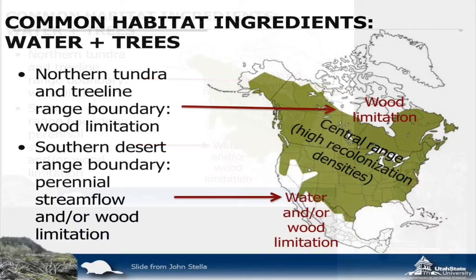The common habitat ingredients that beaver look for are pretty simple: they need water and they need wood. If you look at North America, when we get up into the north we start to see a wood limitation - when you get into tundra. We also see a wood limitation down in the south, and a water limitation down there as well. And the little white spots on that map turn out not to be accurate at all - there are beaver in those areas too.